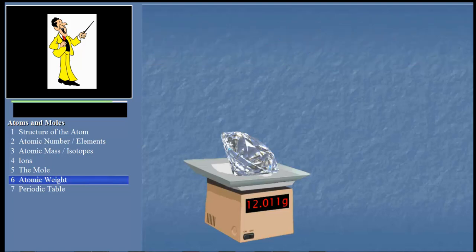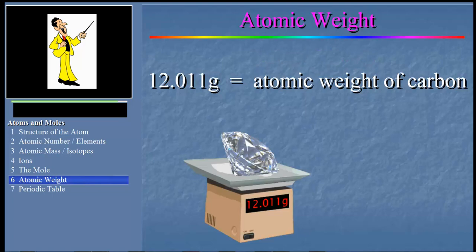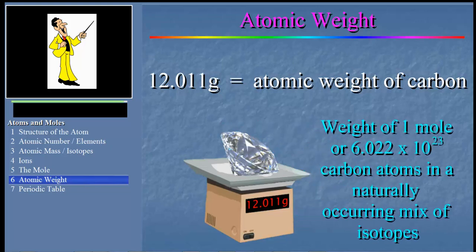Now, this number, 12.011, is called the atomic weight of carbon. It represents the weight of 6.022 times 10 to the 23rd carbon atoms in a typical naturally occurring mix of isotopes.